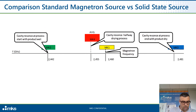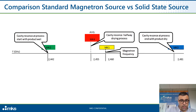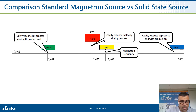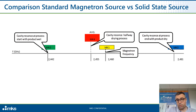The generator can be operated in variable frequency mode, but also in fixed frequency mode. Here you see the difference: in yellow, the marker of the magnetron; while in green, red, and blue, you can see the frequency steps of the product while drying. You have cavity resonance at process start with wet product, then cavity resonance halfway through the drying process, and finally cavity resonance at process end with the product dry.